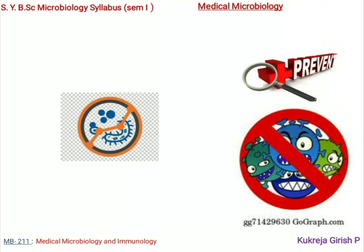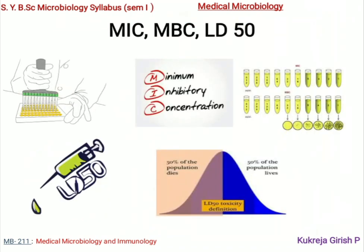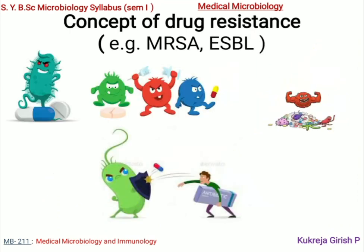After studying these diseases, we will talk about their prevention and control — essentially chemotherapy, the ways and means to treat these diseases. We will discuss the selective toxicity of these agents, bioavailability, and antagonism and synergism in drug administration. Technical terms commonly used to define dosage include the MIC (minimum inhibitory concentration), MBC (minimum bactericidal concentration), and LD50 (lethal dose 50).